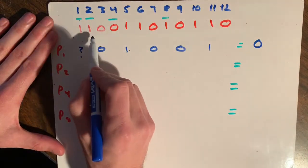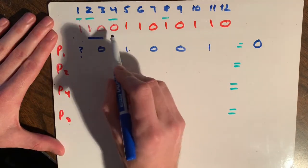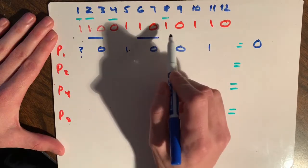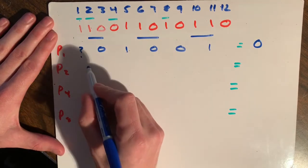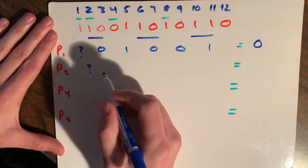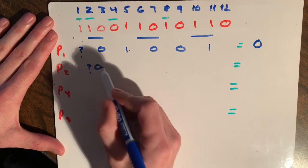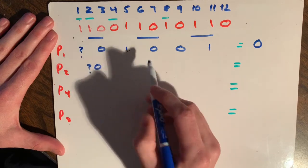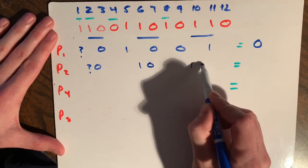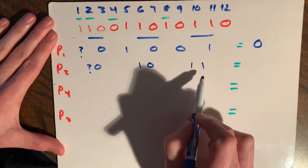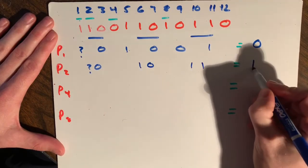Alright, so we are going to check two, skip two, check two, skip two, and check two. And the first one is a parity bit, so we can put a question mark for that. And we'll put down a zero. Then we skip those two, we've got one, zero, skip two, and we have one, one. So we have three ones here, which is odd, so we're going to put a one down.